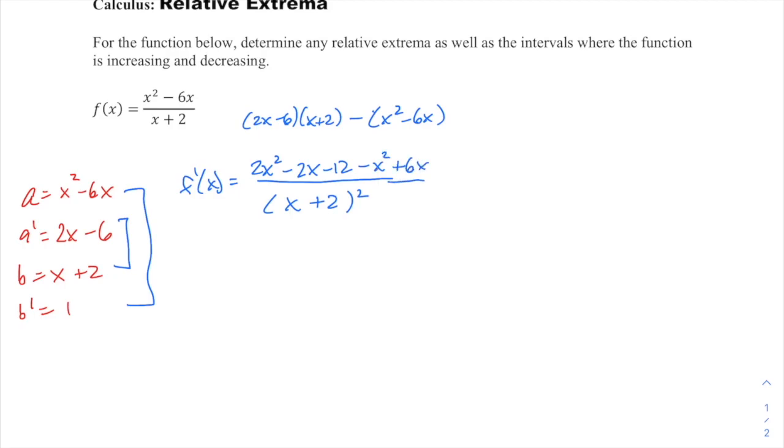Combine your like terms. And we'll have x squared plus 4x minus 12, all over x plus 2 squared.